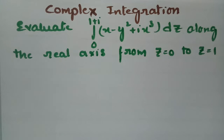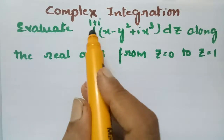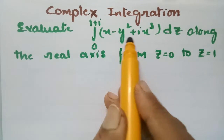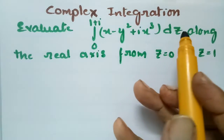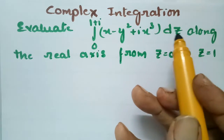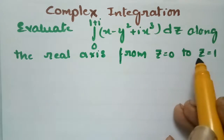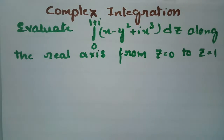In this video I am going to explain the most important problem from complex integration. We have to evaluate the integral from 0 to 1+i of (x - y² + i·x³) dz along the real axis from z = 0 to z = 1.